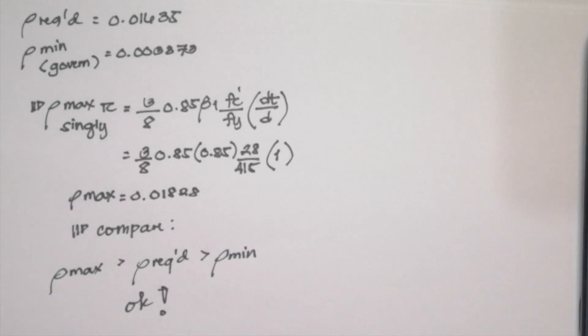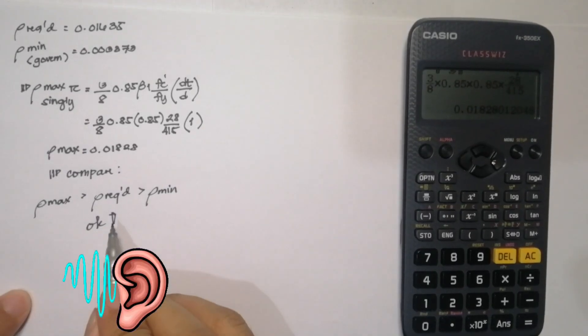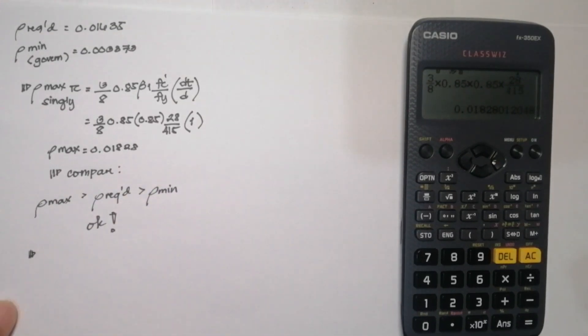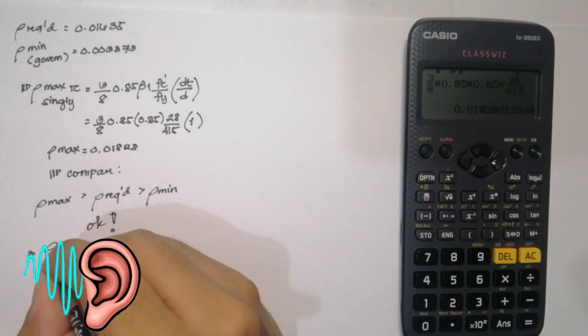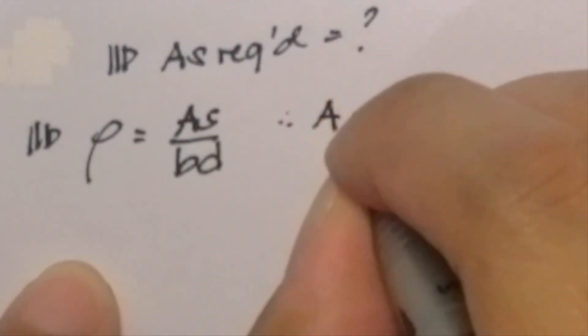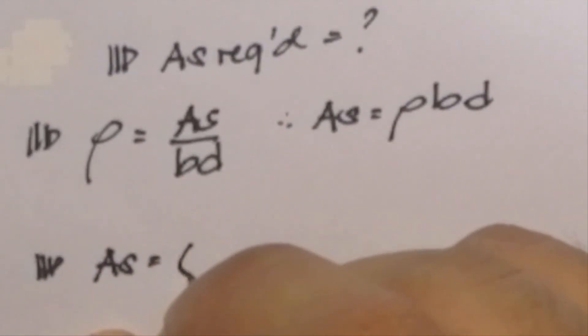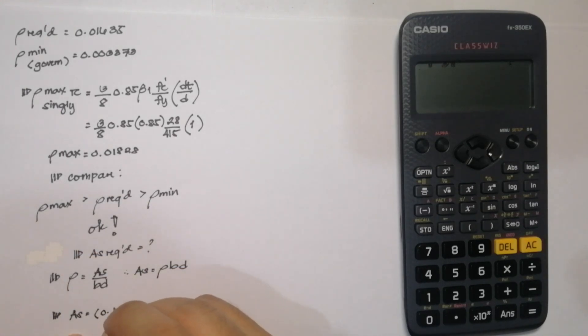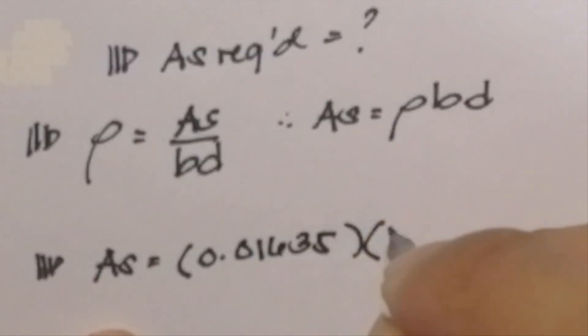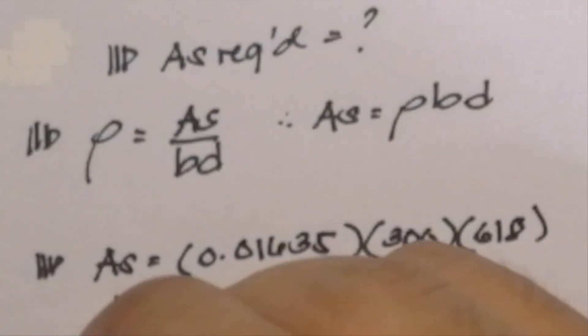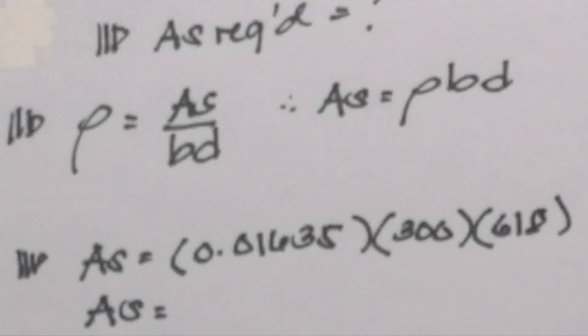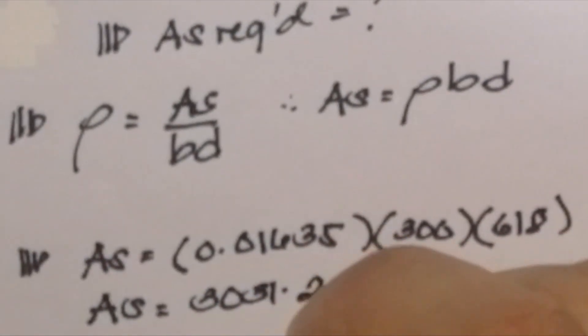Remember: if the required reinforcement ratio is less than the minimum, use the minimum; if it exceeds the maximum, use the maximum. To solve for the required AS, use: AS = ρ × b × d. Using ρ_required = 0.01635, b = 300 mm, and d = 618 mm, the required area of steel is 3031.29 mm².